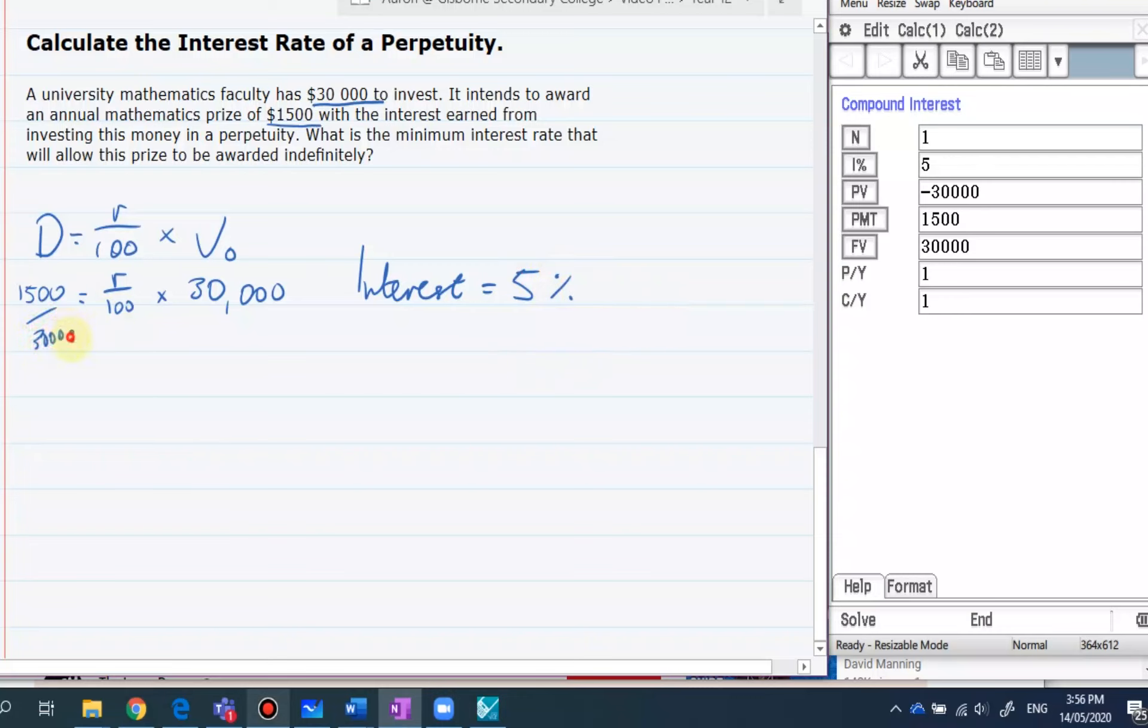So we have it there. We have it there. And that's how to use your CAS to work out the perpetuity or the interest rate for a perpetuity and also how to do it manually.